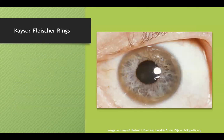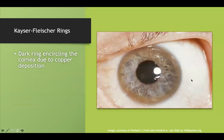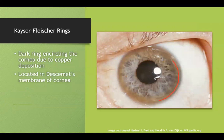Here is our eye — you can notice a dark ring encircling the cornea. This dark ring is not normal, and that's because all the copper is depositing in Descemet's membrane of the cornea. They do want you to know this specific site, Descemet's membrane — very important.